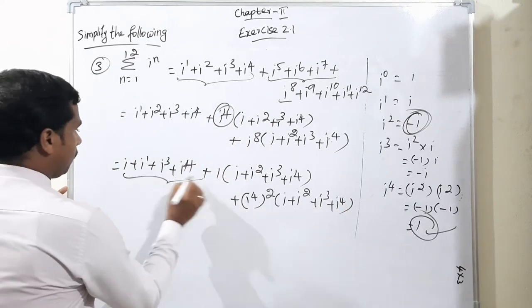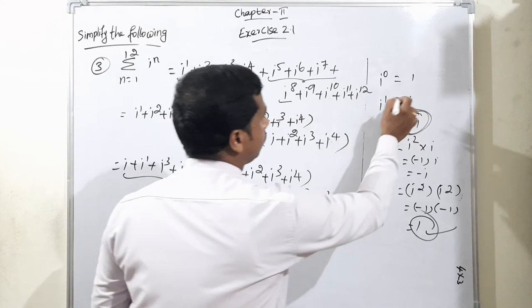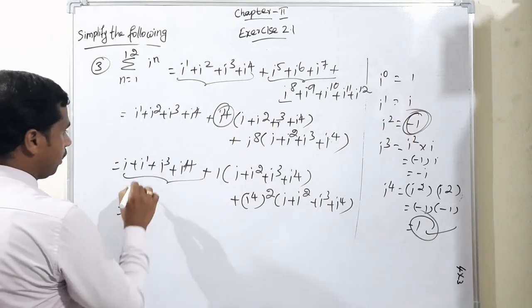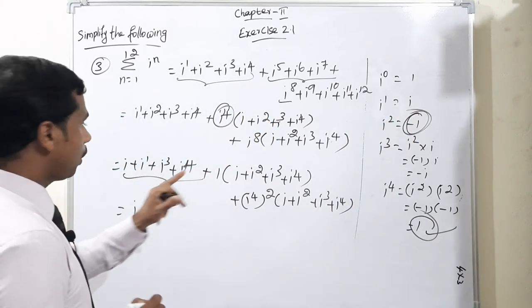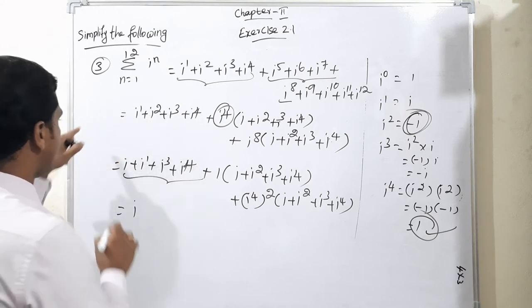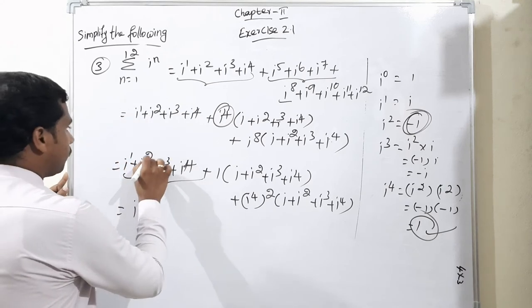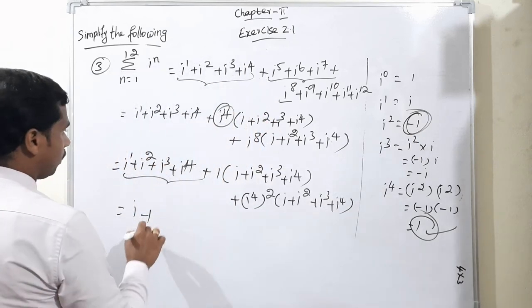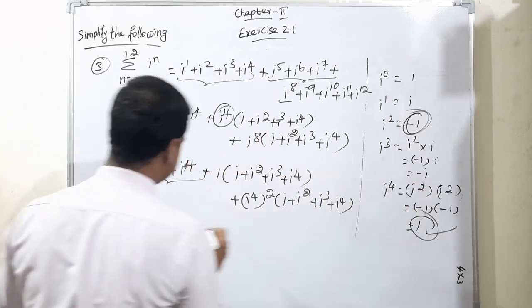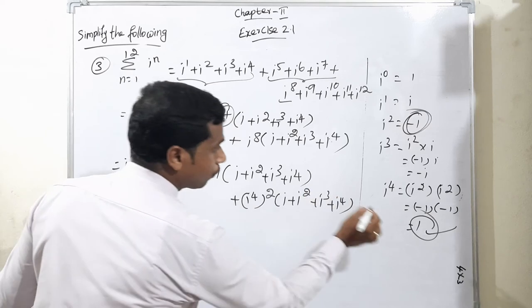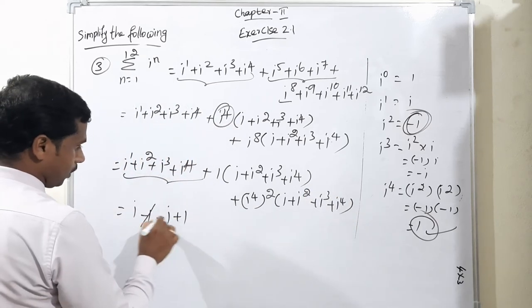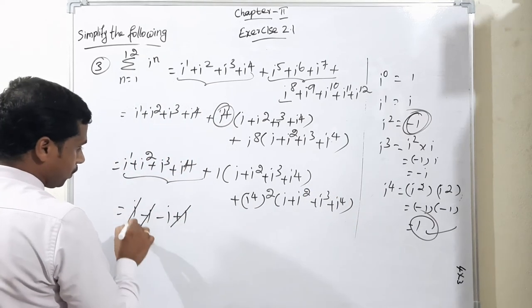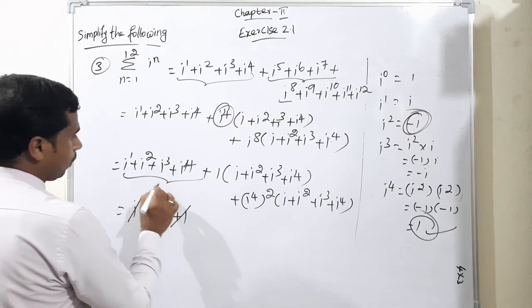Now we know the values of powers of i. i to the power 1 is i, i square is minus 1, i cube is minus i, and i power 4 is positive 1. So positive i minus i cancel, minus 1 plus 1 cancel. The whole term value is 0.